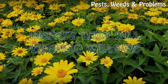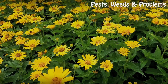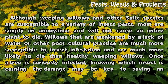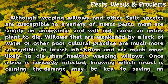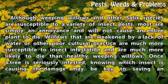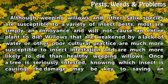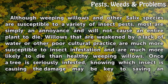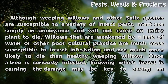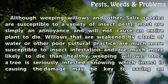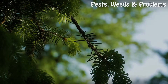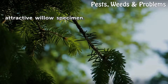Insects that kill weeping willows. Although weeping willows and other salix species are susceptible to a variety of insect pests, most are simply an annoyance and will not cause an entire plant to die. Willows that are weakened by a lack of water or other poor cultural practices are much more susceptible to insect infestation and are much more likely to die than healthy weeping willows. Once a tree is seriously infested, knowing which insect is causing the damage may be key to saving an attractive willow specimen.